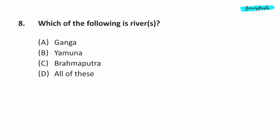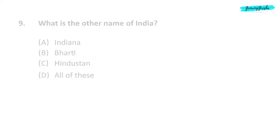Question 8. Which of the following is a river? Option D — All of these. Ganga, Yamuna, and Brahmaputra are rivers.